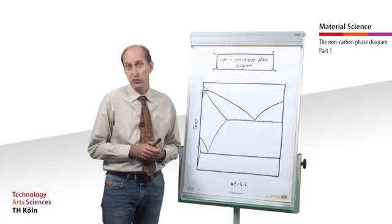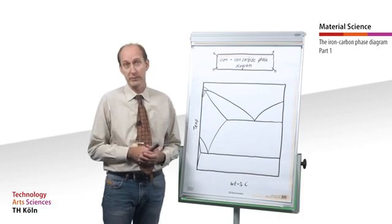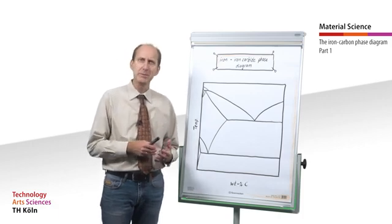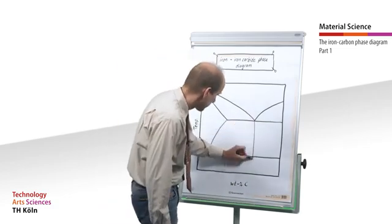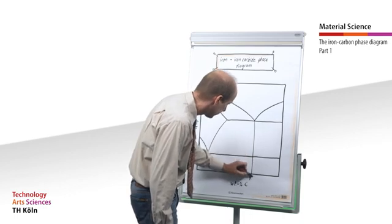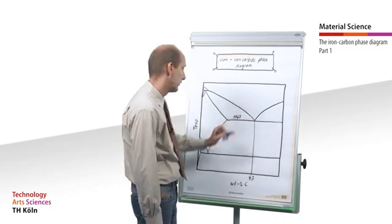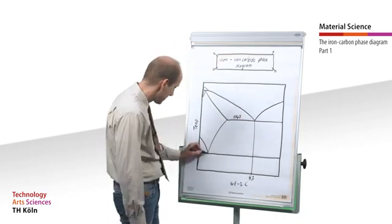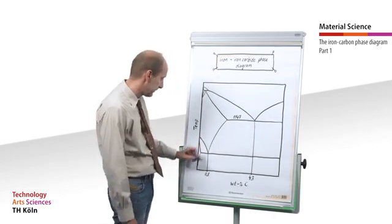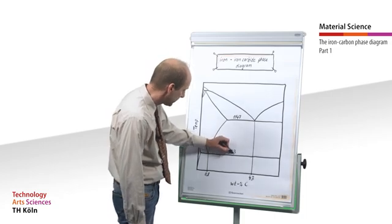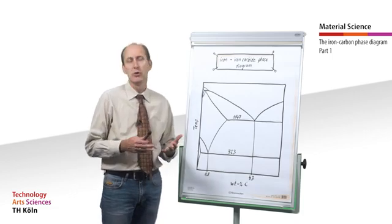The proportion of tertiary cementite can only be negligibly small, which is why it is sometimes left out completely in the literature. It might be helpful to remember the two value pairs: 4.3% carbon and 1147 degrees Celsius for the eutectic system, and 0.8% carbon at 723 degrees Celsius for the eutectoid point, as these can provide some orientation.